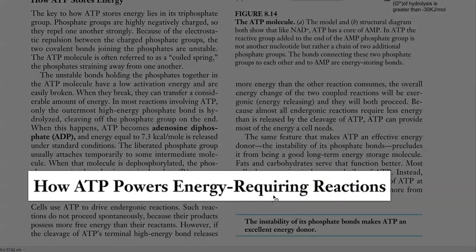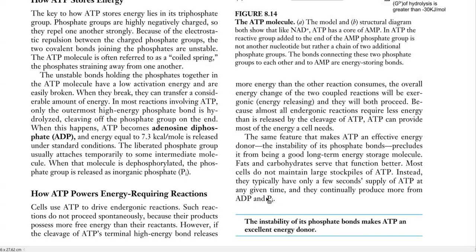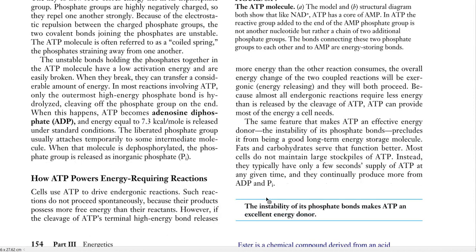Next we look at how ATP powers energy-requiring reactions inside the cells. Cells use ATP to drive endergonic reactions — reactions that do not proceed spontaneously because their products possess more free energy than their reactants. However, if cleavage of ATP's terminal high-energy bond releases more energy than the other reaction consumes, the overall energy change of the two coupled reactions will be exergonic and both will proceed inside the cell. Because almost all endergonic reactions require less energy than is released by ATP cleavage, ATP serves as an excellent molecule to provide most of the energy needs of the cell.